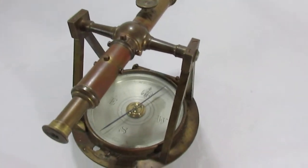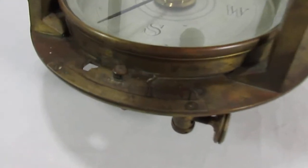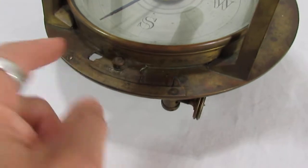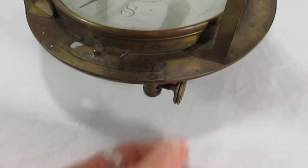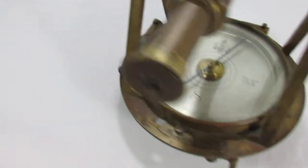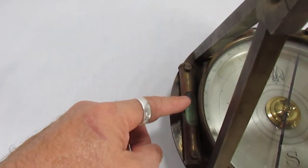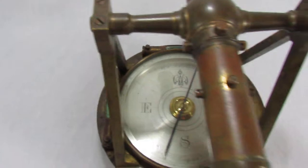We believe this is called a vernier-style compass because of the adjustments right here. It's got two level bubbles right here and right here. Both are intact and functional.